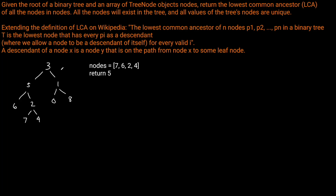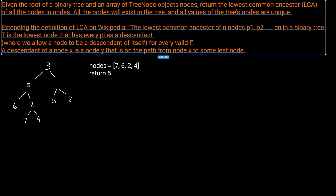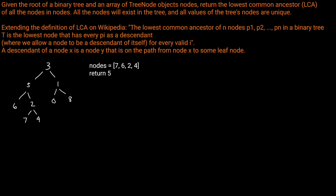If we look at our example, we're given this binary tree, and we have the nodes 7, 6, 2, 4 — we should return 5. We have 6, 2, 4, 7, and the first point where they all converge is at node 5. So 5 is the LCA.